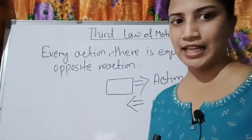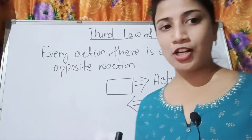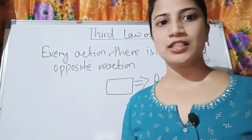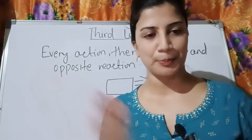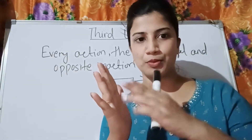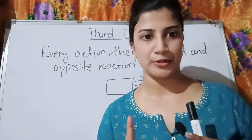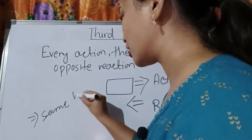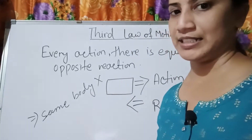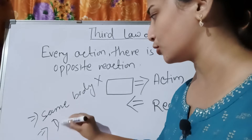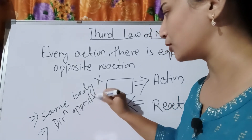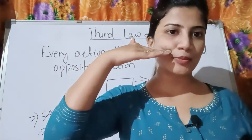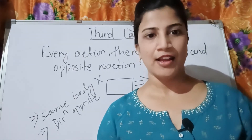An important thing to understand: action and reaction cannot act on the same body. If the action is on the board, the reaction will never be on the board — it will be on the other body. Action and reaction always act on two different bodies. Also, the direction of action and reaction is always opposite to each other.